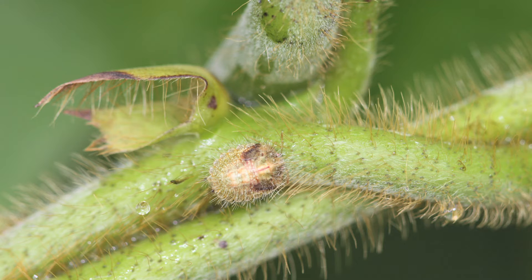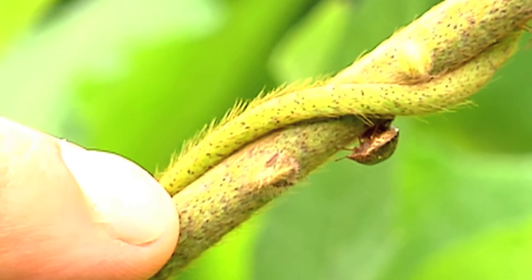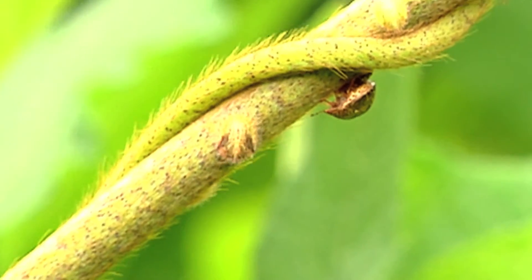As the season progresses you're going to see more immature life stages or nymphs of kudzu bug in the soybean field, and you need to be able to recognize them. They really don't look a whole lot like the adult. They range in color from almost white to a mid-tone brown, tend to be more rounded in shape, and are somewhat unique and easy to identify because their bodies are covered with small fine hairs.